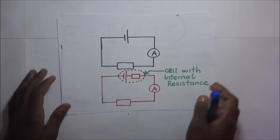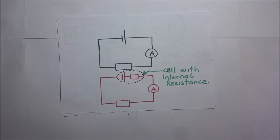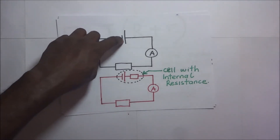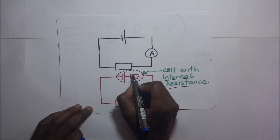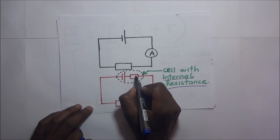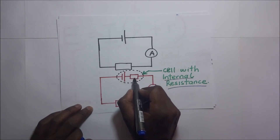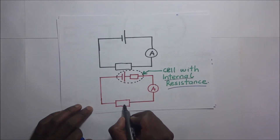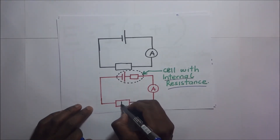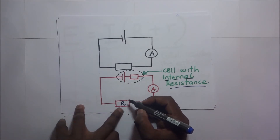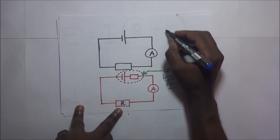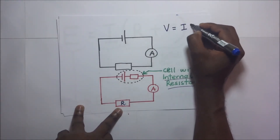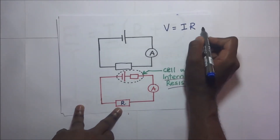Previously, we have been calculating voltage, current, and resistance while ignoring the internal resistance — taking it to be negligible. But if internal resistance is not to be ignored, we treat it as a resistor in series with the rest of the resistors in the circuit. We know that the total PD is V = IR, so the EMF, which is the total PD, equals I times the total resistance.